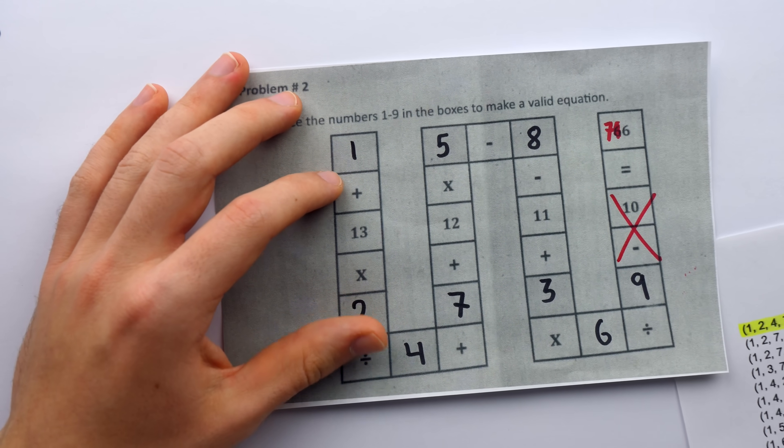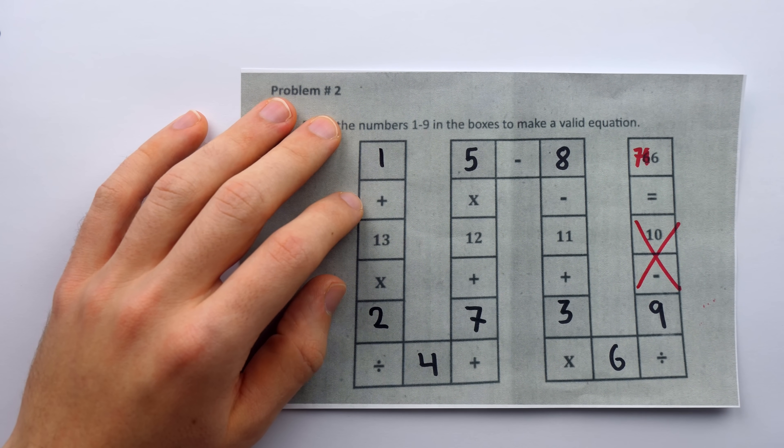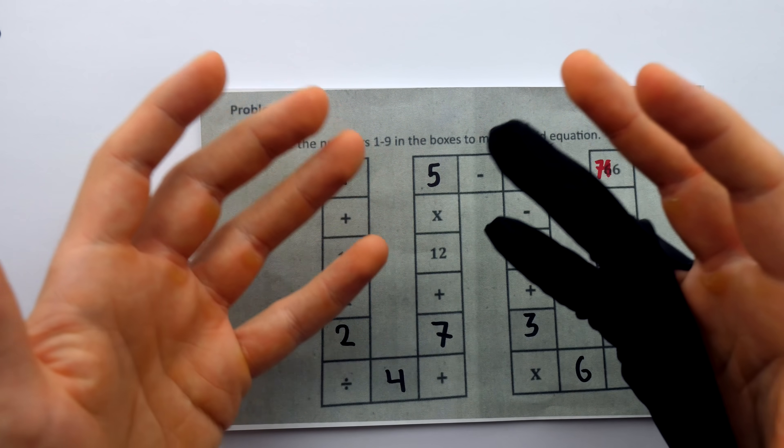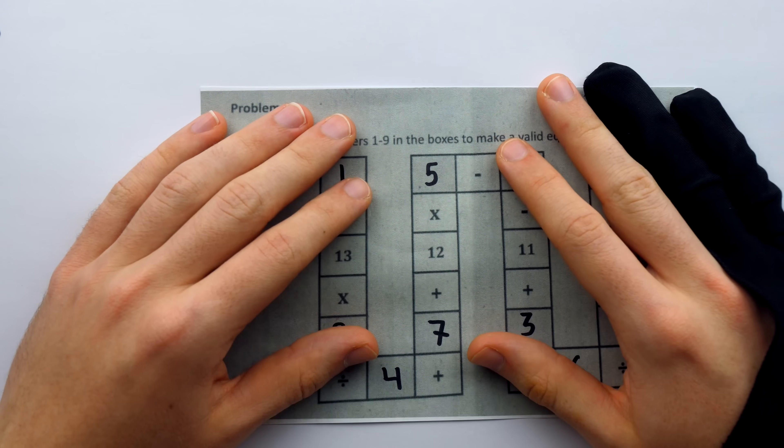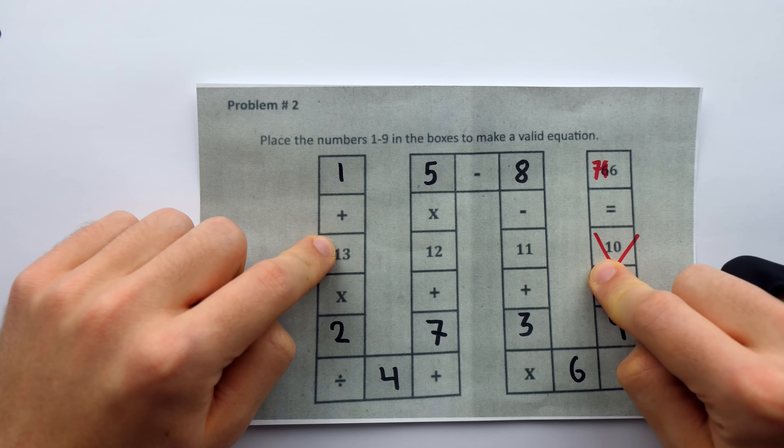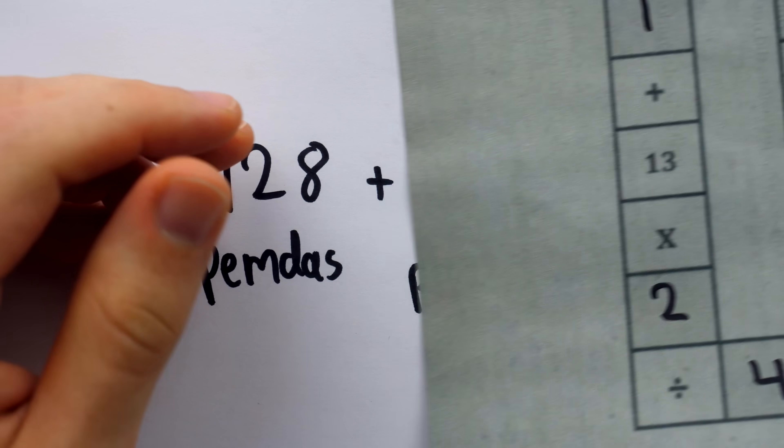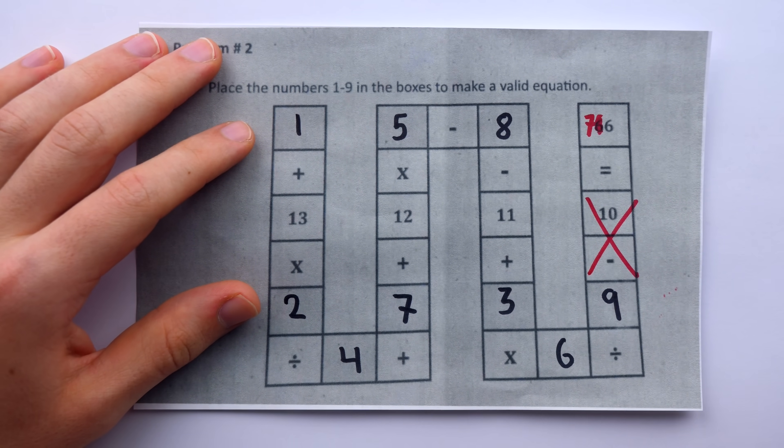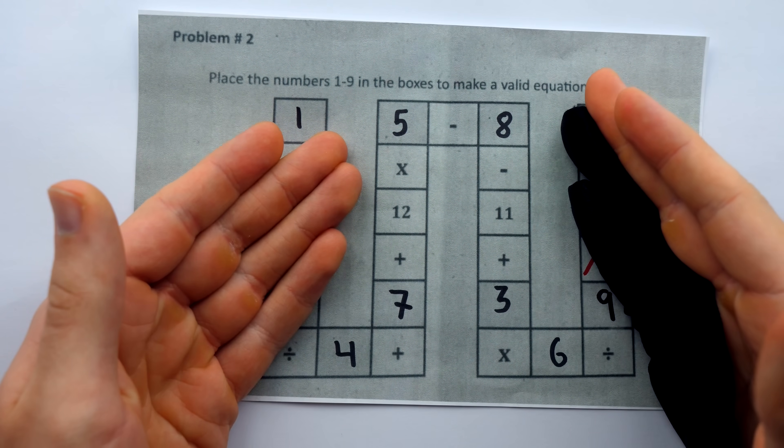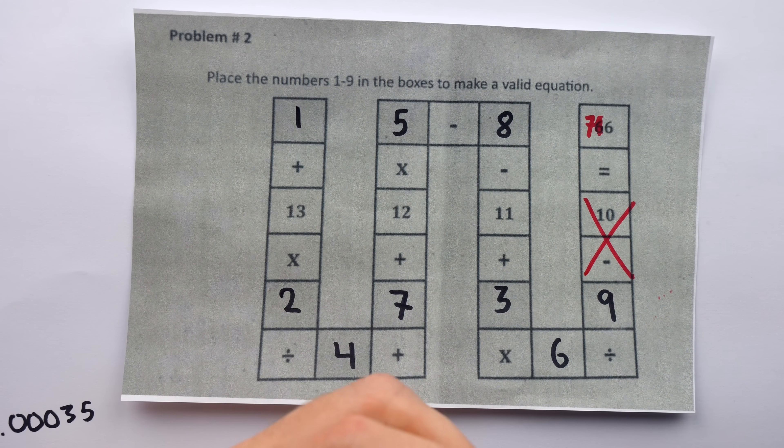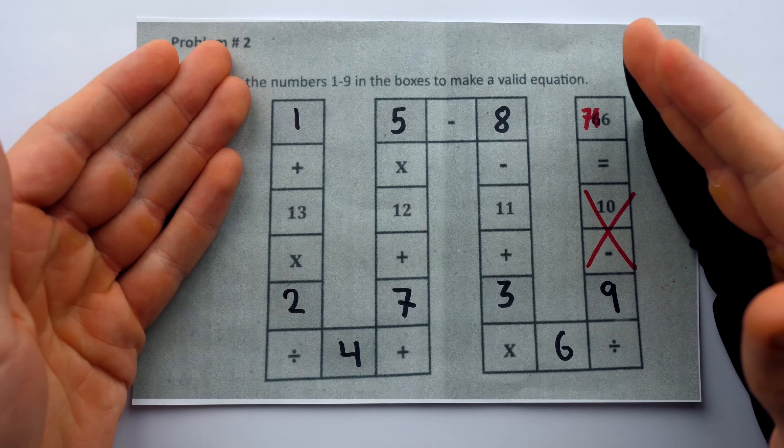Unless we're missing some wild trick here, out of the about 725,000 possibilities a student might check to solve this problem, 272 of them work. So yeah, wow. Pretty awful assignment. But you know, I can't help but keep hope in my heart that maybe we are missing something.